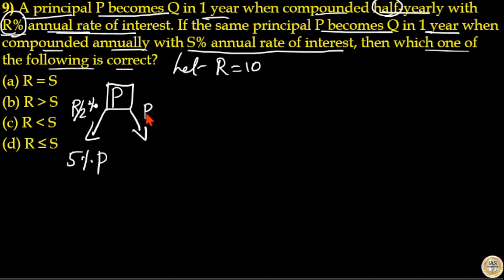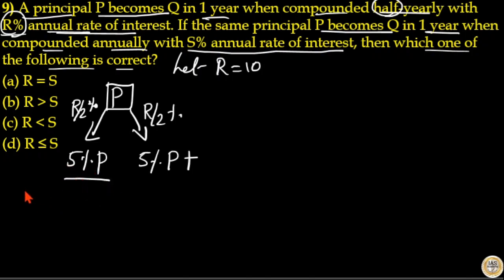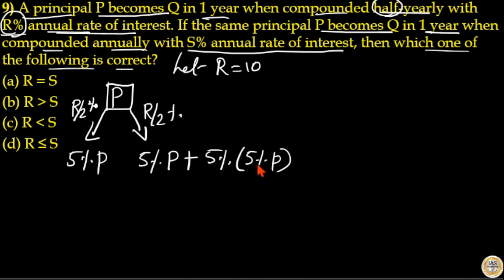For the next six months, again R by 2 percentage is the rate of interest — that means 5 percentage of principal is added again. With compounding, interest is also earned on the previous interest. The interest received for the last six months is 5 percentage of P, and 5 percentage of that interest is also added. So the total for the second half is 5 percentage of P plus 0.25 percentage of P.